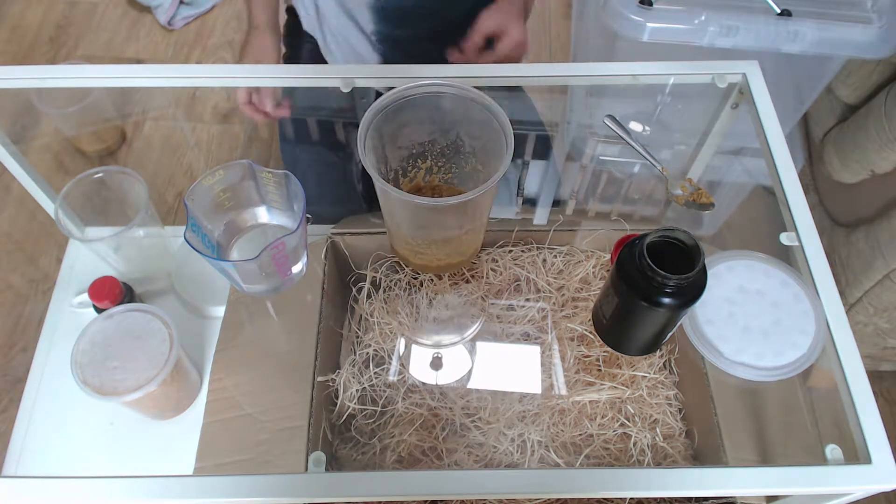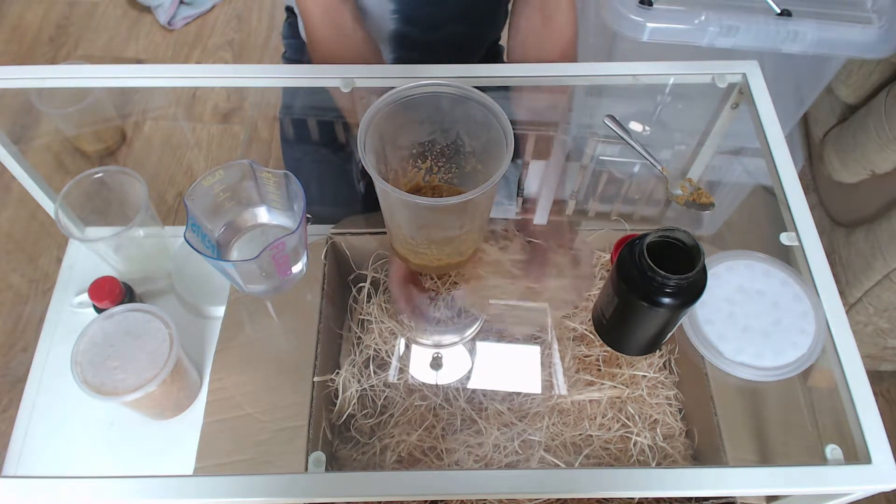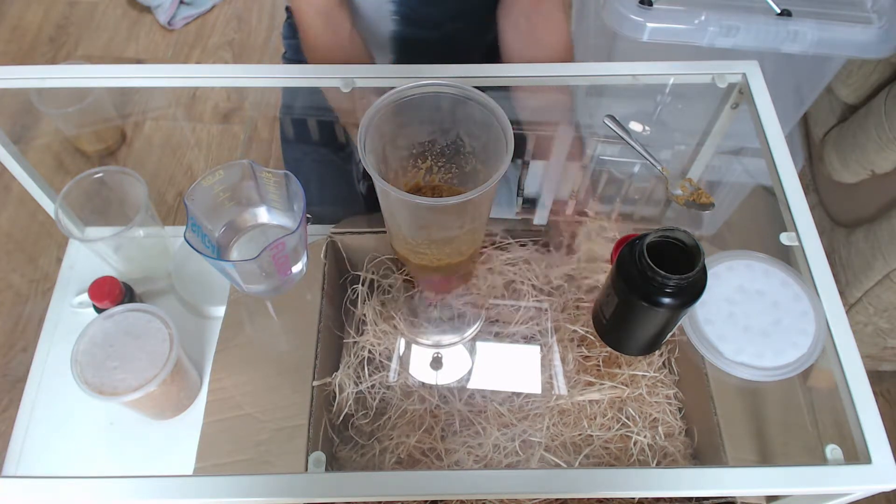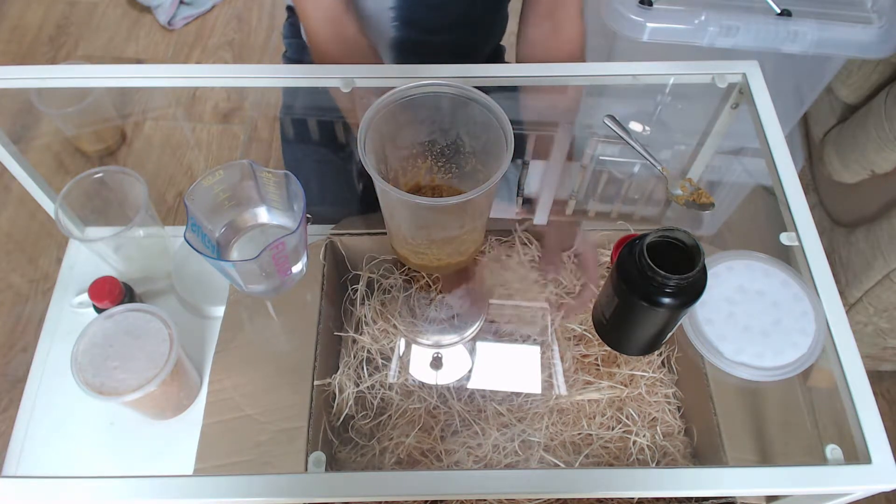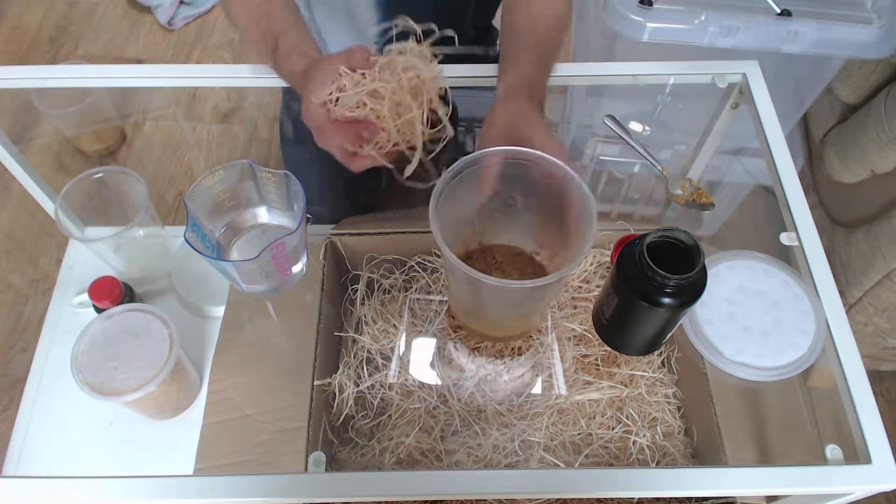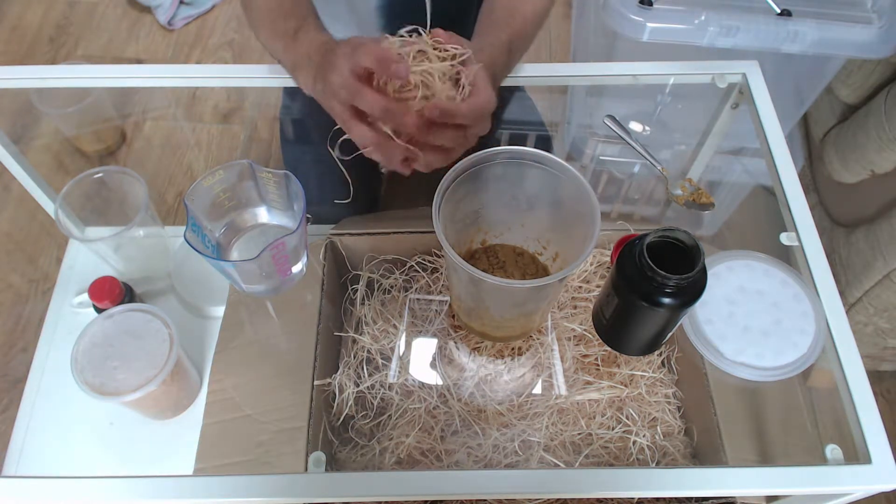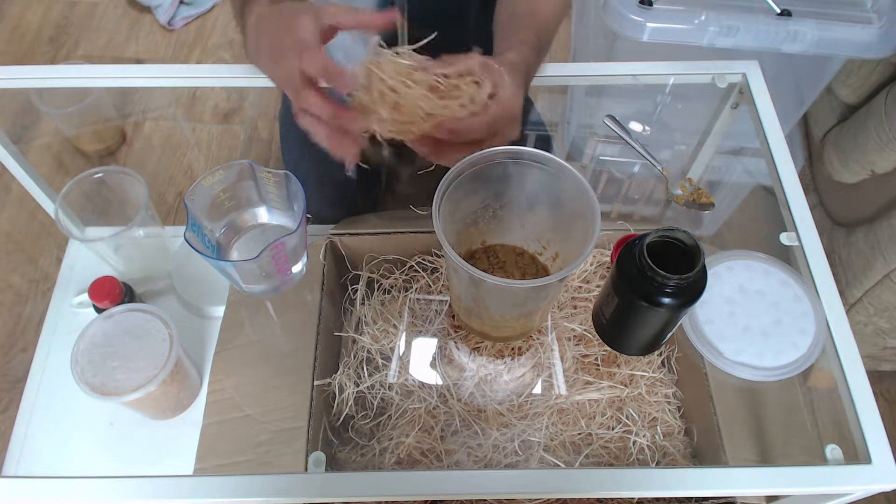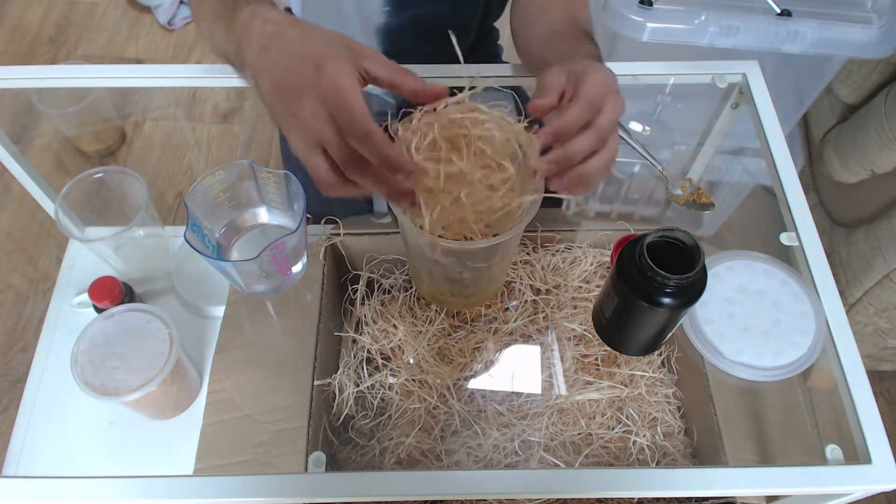Once that's done, you want to grab a good handful of the shredded wood. Ball it up so that you've got not too many bits sticking out because it makes it annoying to put the lid on later. And then just shove that in there.